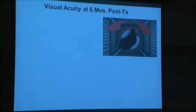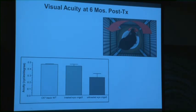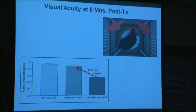Again using the optokinetic apparatus to measure visual acuity — untreated eye, treated eye — the treated eye regains visual acuity back to basically wild-type, with a p-value of 0.05.